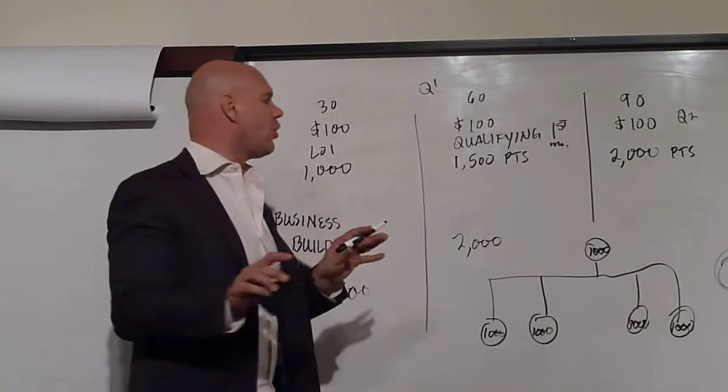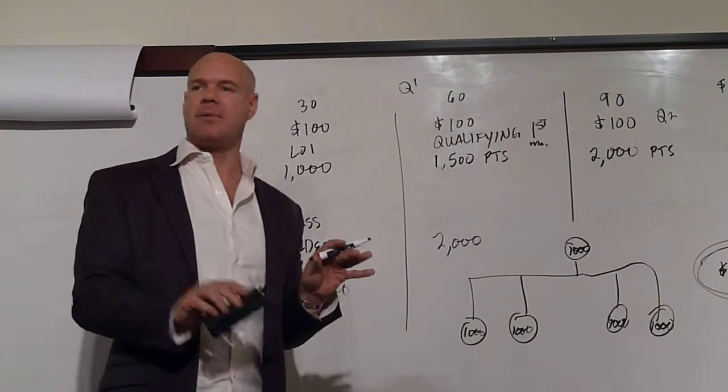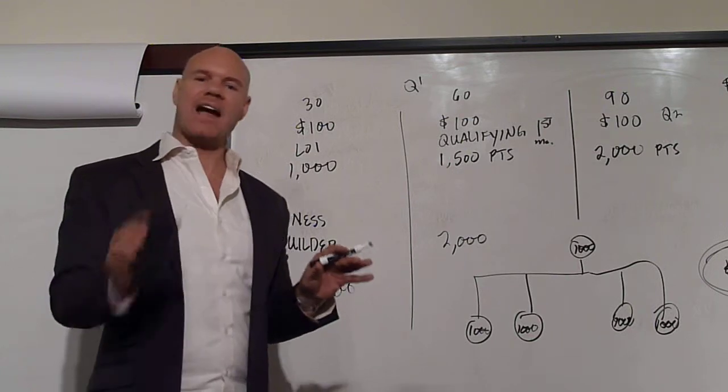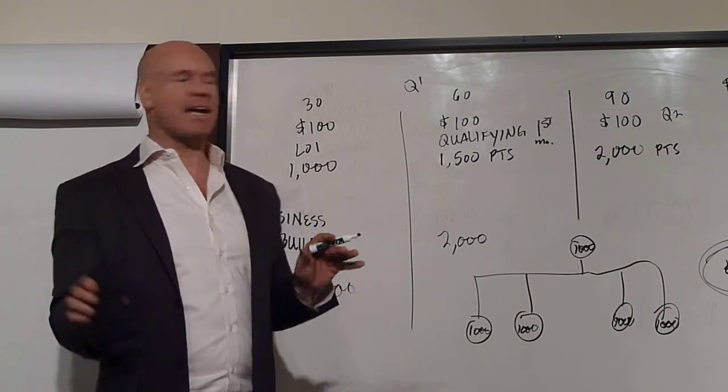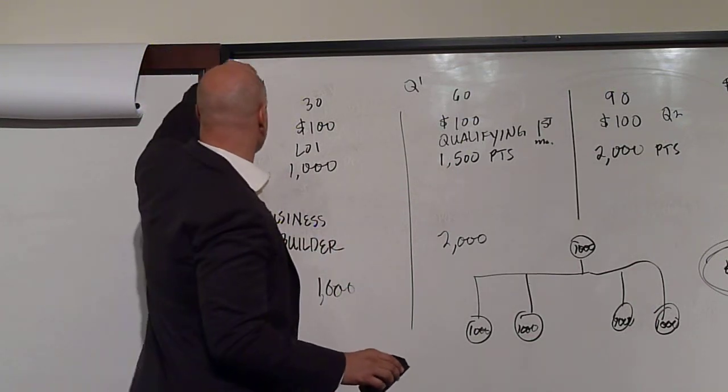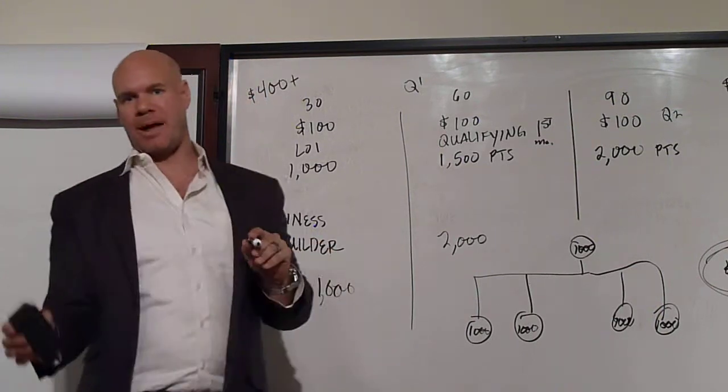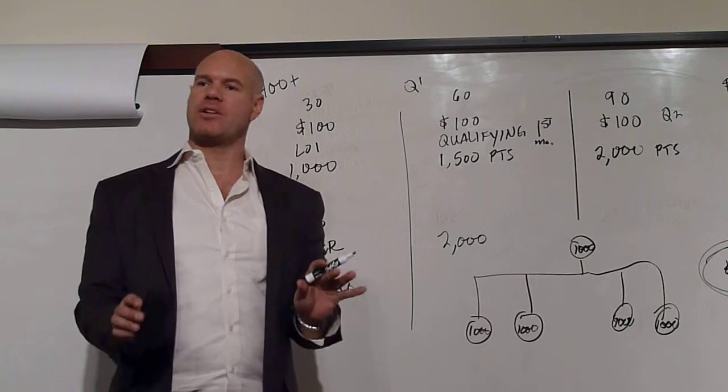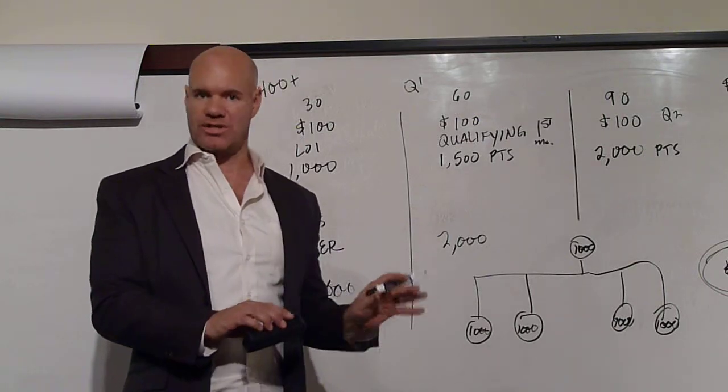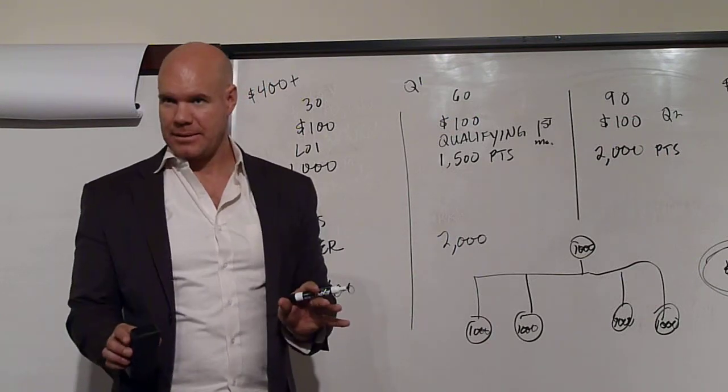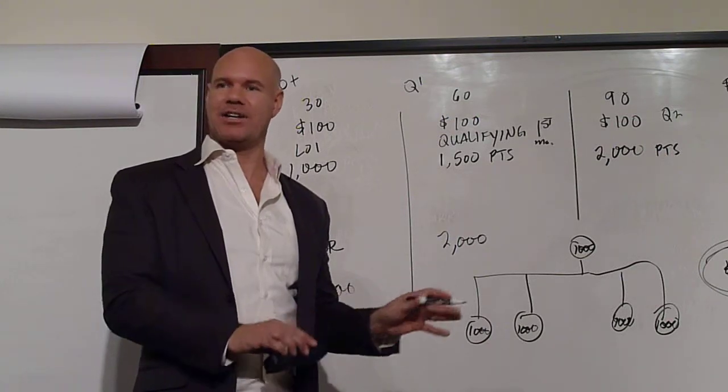Now the reason this is so critical is the average income—Nu Skin is a publicly traded company so you can verify these numbers—the average income of an executive is four hundred dollars a month residual. We're just above four hundred dollars a month. That four hundred dollars a month equals five thousand dollars a year, and you would have to have a hundred grand in the bank to make five thousand dollars a year in interest or residual income.